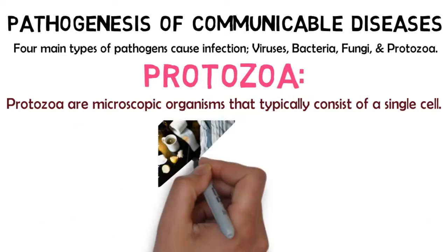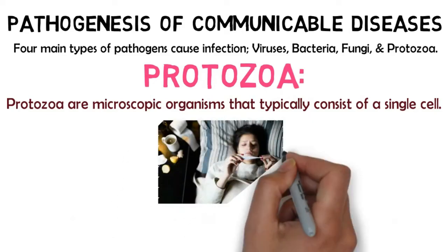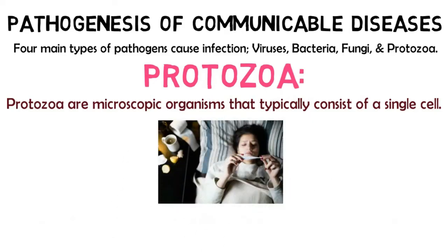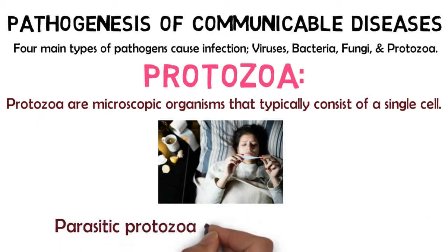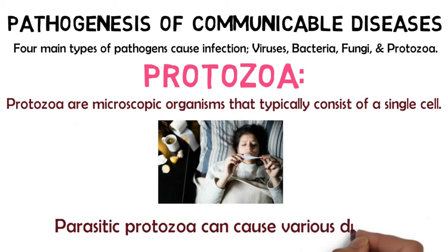Protozoa are microscopic organisms that typically consist of a single cell. Some protozoa are parasitic, meaning they live on or inside another organism and use the organism's nutrients for their own survival. Parasitic protozoa can cause various diseases.